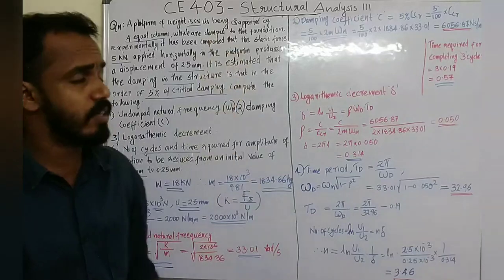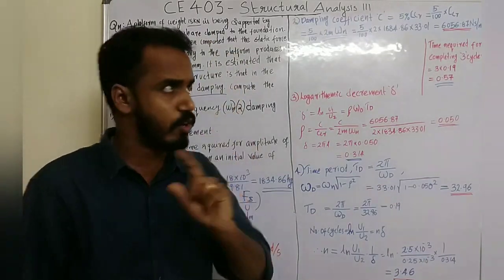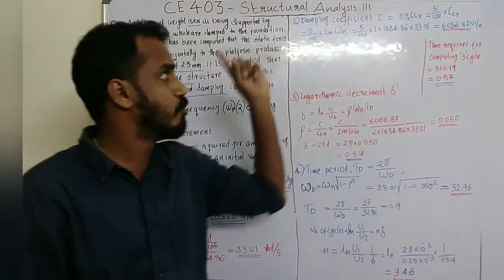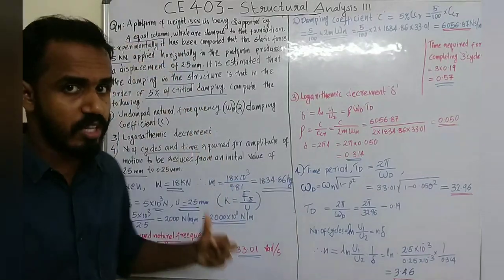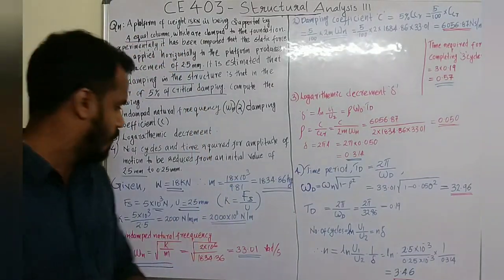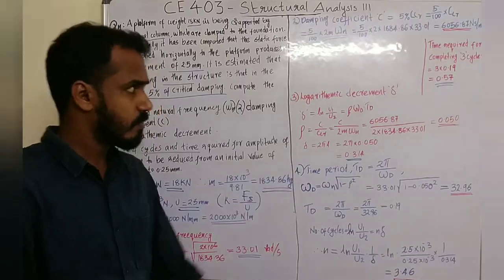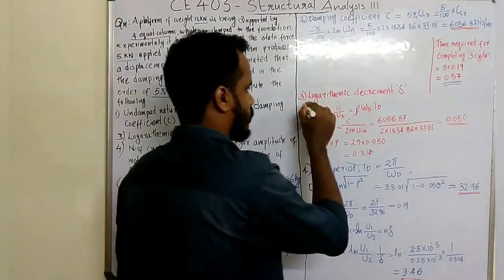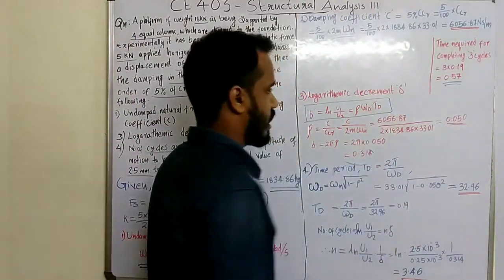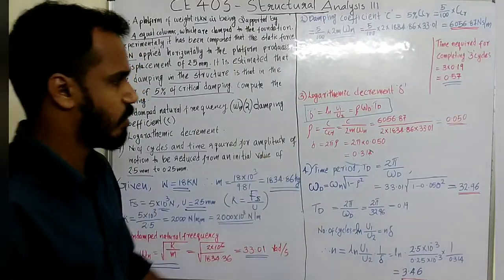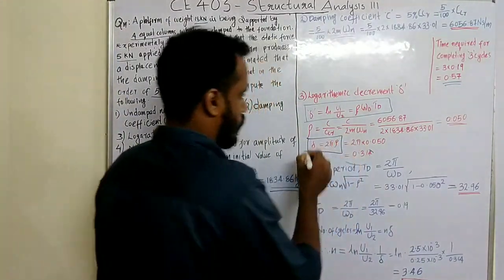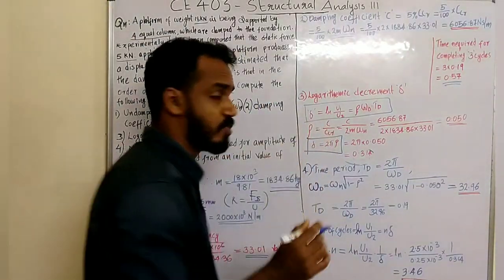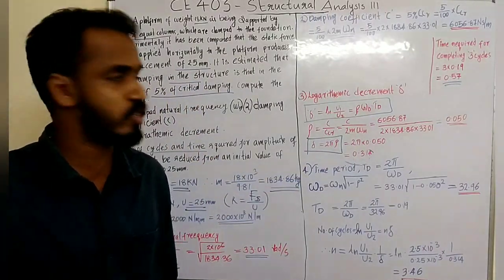Where m is the calculated mass and omega n is the undamped natural frequency. For logarithmic decrement delta, delta is equal to ln(u1 by u2), which equals omega_d times t_d, which equals 2π times rho, where rho is the damping ratio c by c_cr.